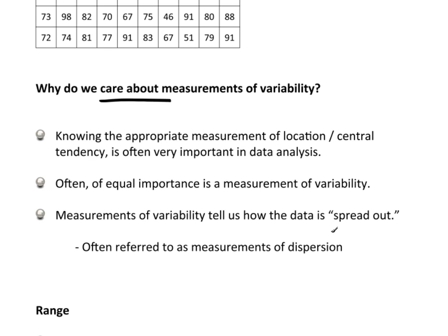We've talked about the idea of measurements of location or central tendency, and very often knowing these measurements of location or central tendency is extremely important. Those measurements of central tendency are probably the single most used measurements to compare two groups or one group against a known. They're extremely important, they're used a great deal. But often of equal importance is the idea of the measurements of variability. Measurements of variability tell how the data is spread out, and the idea of this spread is extremely important. In some areas or some interests, the idea of the spread may be actually even more important than this idea of a location or central tendency.